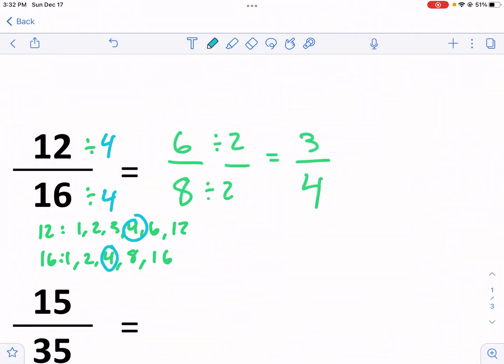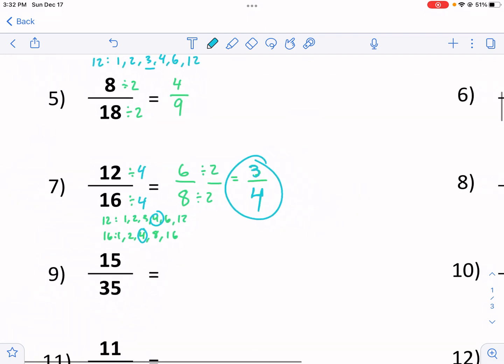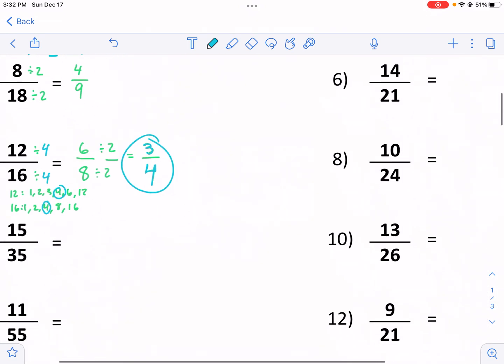So, if I would have divided by four, 12 divided by four is three, and then 16 divided by four is four. That would have been a quicker way to do it, but my other way of dividing and then dividing again also works, but it's not the best and most efficient way to do this.